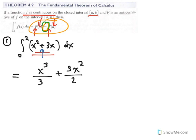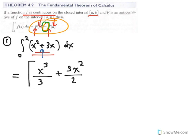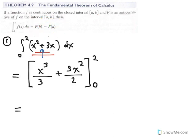As soon as you find the antiderivative, you no longer write the integral sign — that notation is only for writing the definite integral. When you find the antiderivative, put it in brackets and write the upper and lower limits of integration alongside it. Then go ahead and evaluate the antiderivative at the upper limit of integration 2 and the lower limit of integration 0, and subtract.